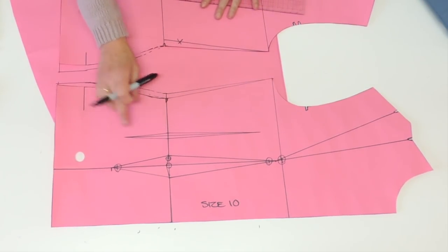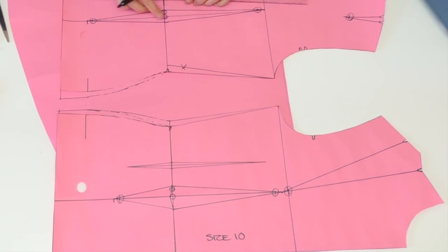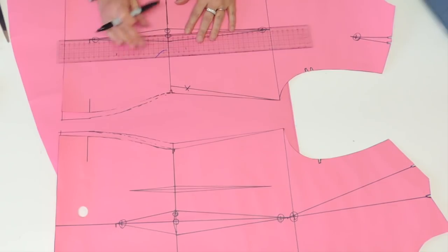If you do a second dart in the front, I think it would be a very good idea to do the same thing on the back. So here I'll do, again, 3.5 from the side of the dart.